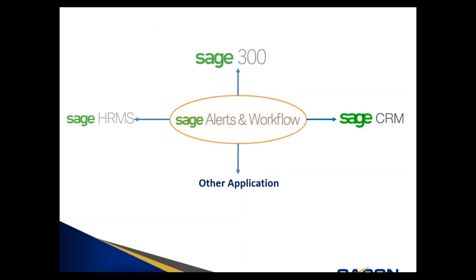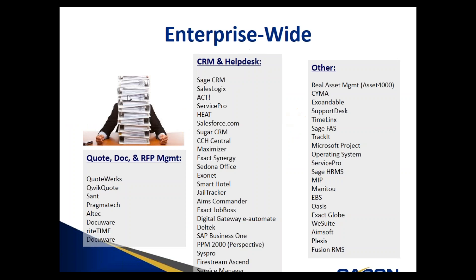Sage Alerts and Workflow can connect with Sage or non-Sage applications via ODBC, which is an acronym for Open Database Connectivity. Essentially, Alerts and Workflow is a universal application that connects to a variety of software systems. Here are some examples of other compatible software — it supports a variety of mainstream business applications in the marketplace. This is by no means a complete list of compatible software, but rather a cross section. I can share this list with anyone who is interested.